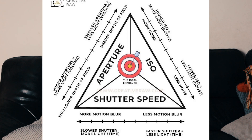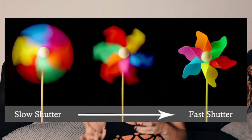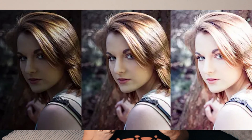To master manual mode you need to learn about the exposure triangle. There's aperture, shutter speed, and ISO. Aperture controls the light and the depth of field. Shutter speed freezes or blurs motion, and ISO sets the sensitivity to light.